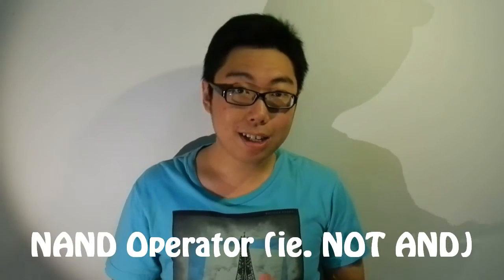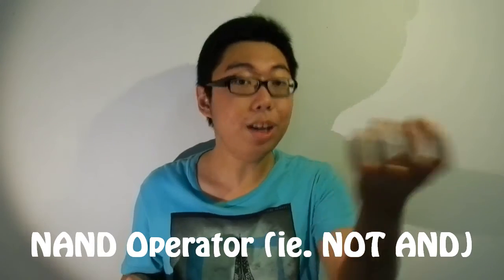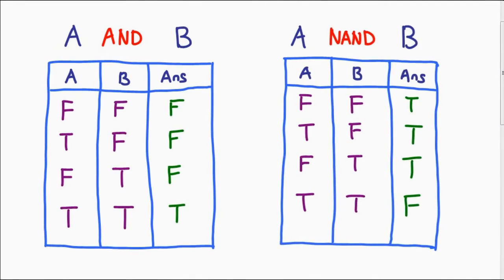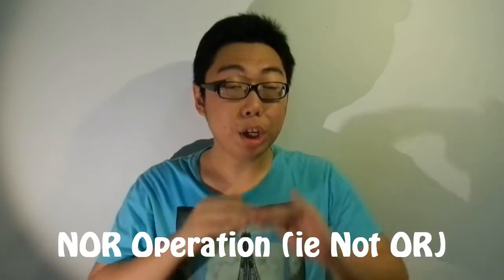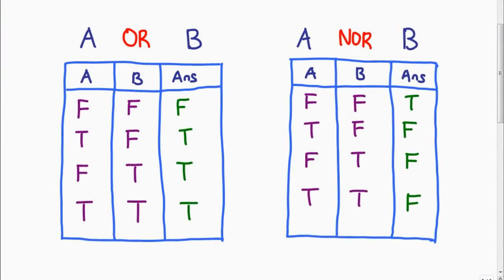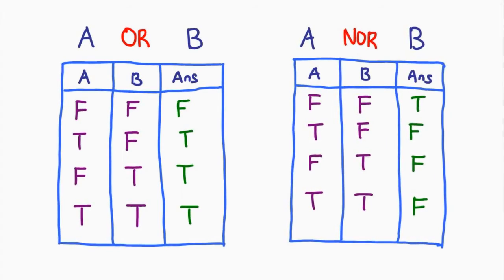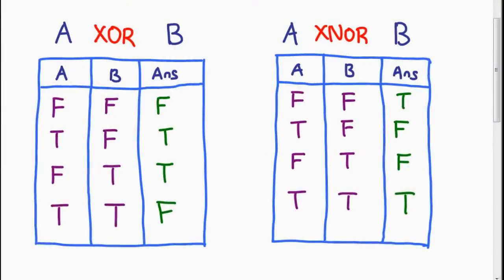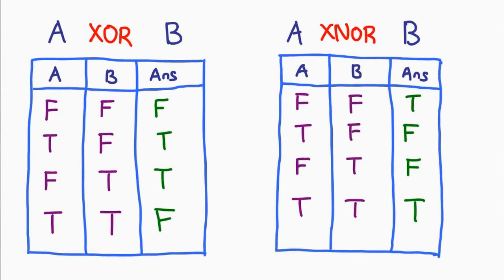We have two more operations to cover, which are combinations of NOT and the previous gates. The NAND gate is the same as an AND gate where you then NOT the answer — it is an exact inversion of the AND gate truth table. Then the NOR operation is simply the inverse of the OR operation. Everywhere you expect a 1 you get a 0, and everywhere you expect a 0 you get a 1. We can also apply this to the XOR gate, giving us the XNOR gate — the exact same idea. As long as you think of any of these gates as inversions of their normal form, you'll be alright.